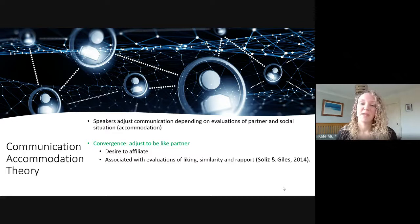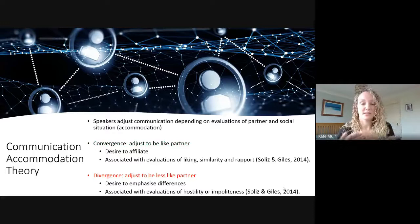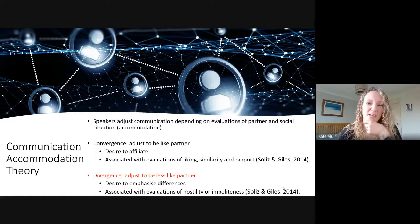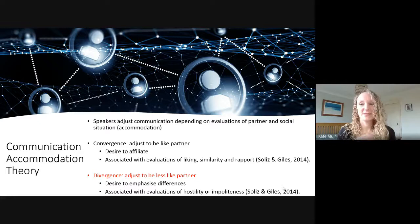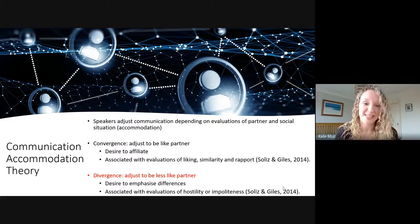There are two broad ways we can accommodate our communications. The first is convergence — adjusting your communication to be more like the person you're talking to. It usually signals a desire to affiliate and is associated with evaluations of liking, similarity, and rapport. The opposite is divergence, where you adjust your communications to be less like the person you're talking to — for example, broadening a northern accent to signal difference. Divergence is generally perceived as being a bit impolite or rude.